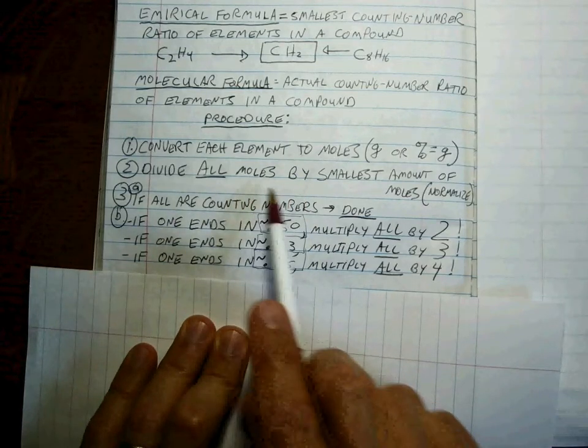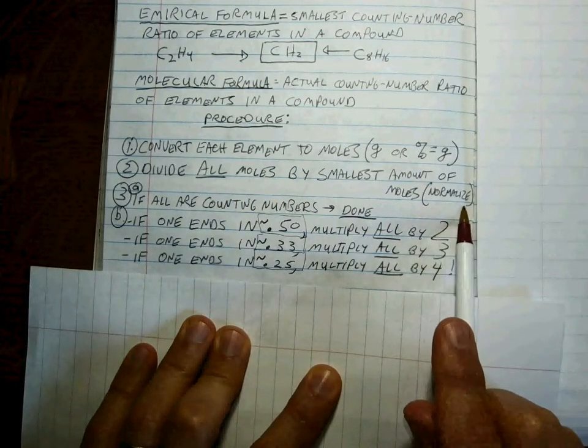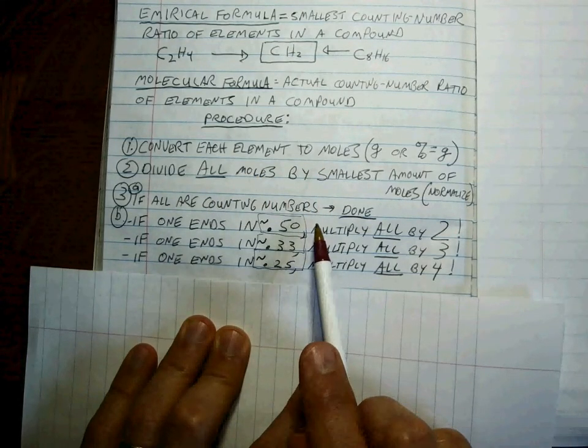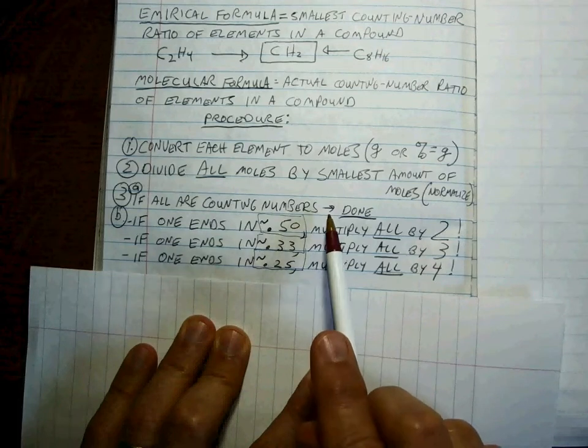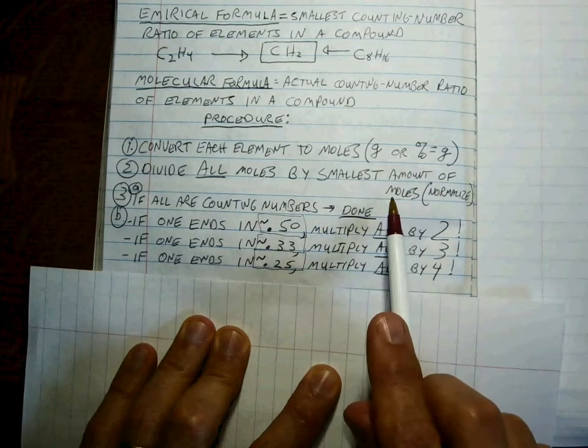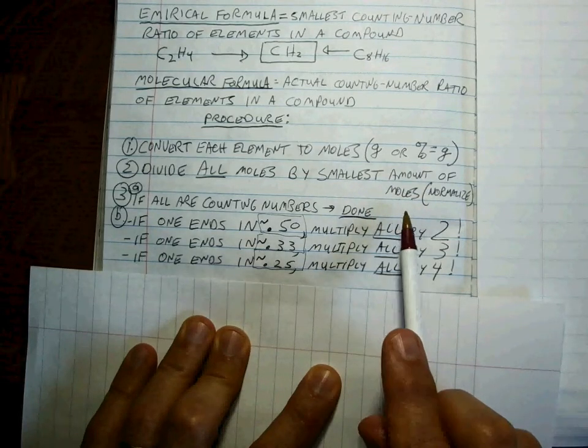Once you're at moles, we want to do something called normalizing, which means you divide every mole for all the elements that you calculated and divide them by the smallest so that we set the smallest equal to one and then compare all the others.